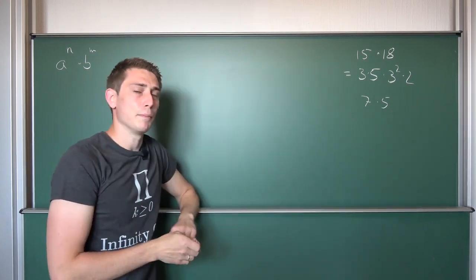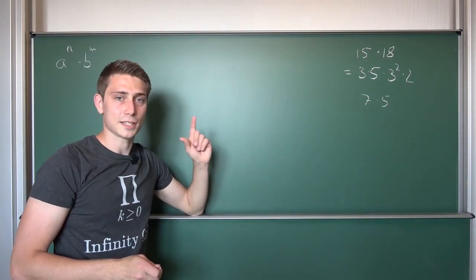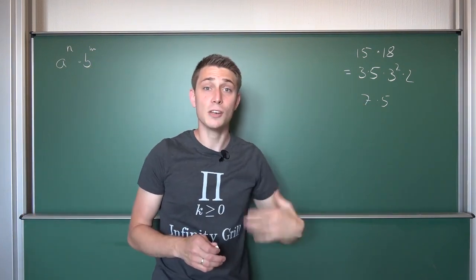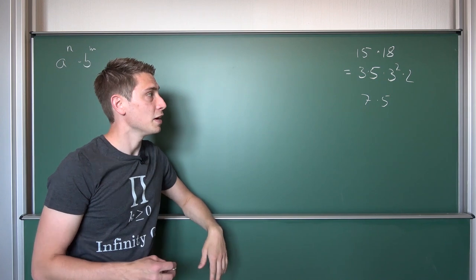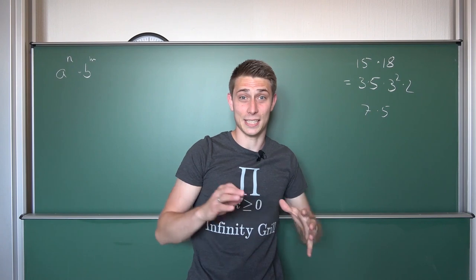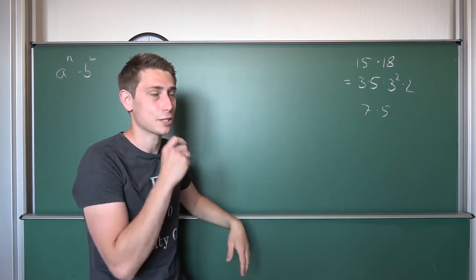The thing with prime numbers is that, by definition, the only two factors are 1 and themselves. Meaning, we can only express 7 as 1 times 7 and 5 as 1 times 5. And we can't really split anything up and collect like factors. This is kind of hard here.